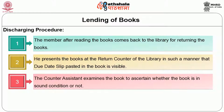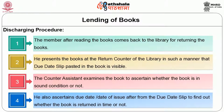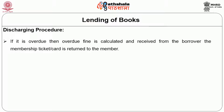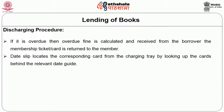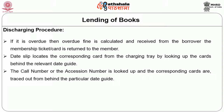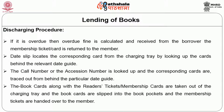When the reader comes back to return the books, he presents them at the return counter so that the due date slip is visible. The counter assistant examines the books to ascertain whether the book is in sound condition, and checks the date of issue from the due date slip to find out whether the book is returned in time. If it is overdue, an overdue fine is calculated and received from the borrower. The membership ticket is returned to the member. The corresponding book card is located from the charging tray by looking up the cards behind the relevant date guide by call or accession number, and the book cards are slipped back into the book pockets.